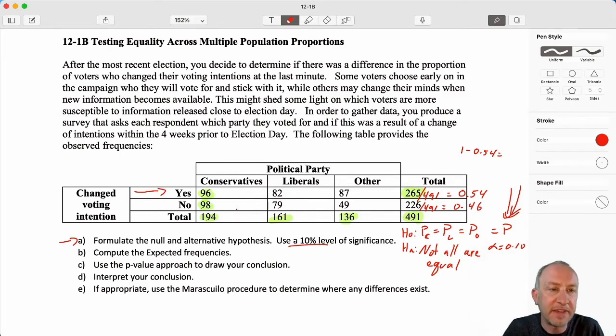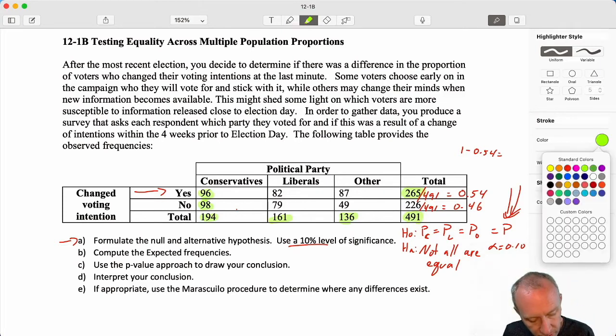So 54% of respondents said yes, I did change my voting intention within the last four weeks. 46% said no. So those are what we would expect the proportions to be if the null is true, which means it doesn't matter if you voted conservative, liberal, or other. That is what we would expect that proportion to be. So we apply that proportion to our various samples.